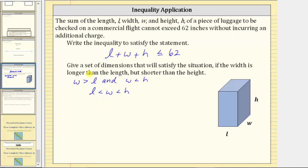The second question is asking us to find one set of possible dimensions that satisfy this compound inequality, as well as the inequality L plus W plus H, less than or equal to 62.